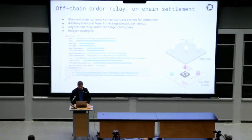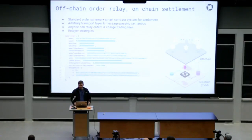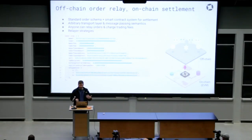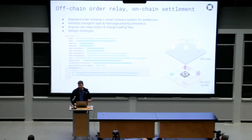0x protocol uses a different approach called off-chain order relay with on-chain settlement. 0x protocol basically consists of two different ingredients. The first is an order schema that tells you how to arrange data into a packet and signal your intent to enter into a trade. It contains details like the assets you would like to exchange, the exchange rate, and the time to live — at what point will this order no longer be valid. The second part is a system of smart contracts on the Ethereum blockchain that accept these cryptographically signed 0x orders and settle trades to the blockchain.